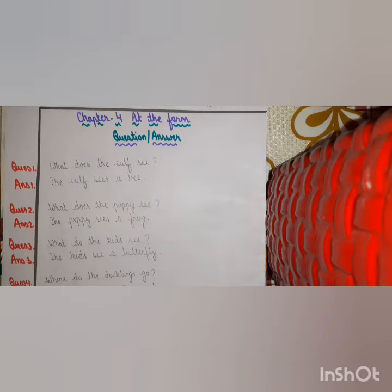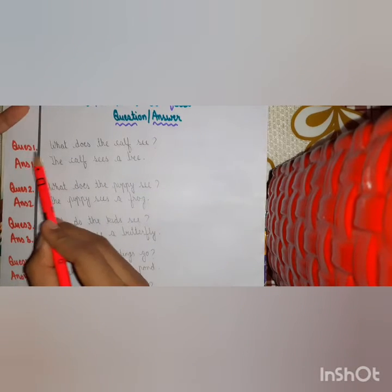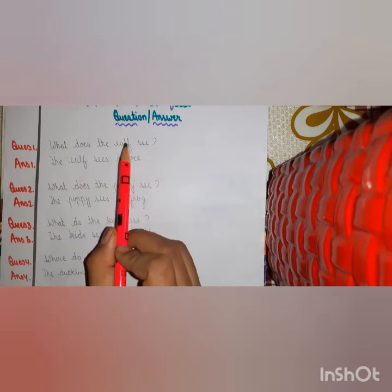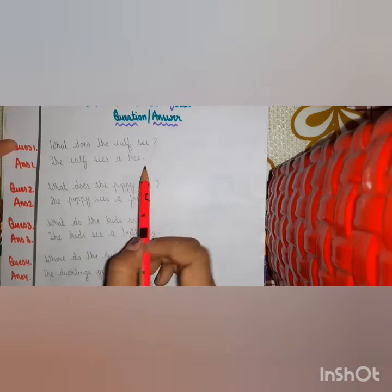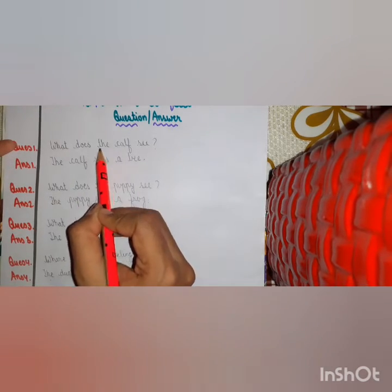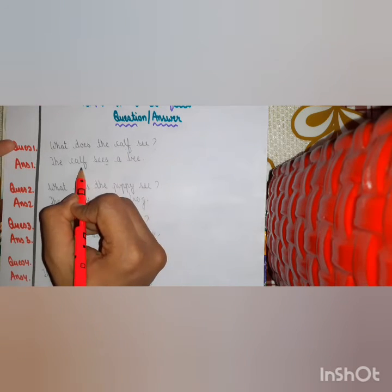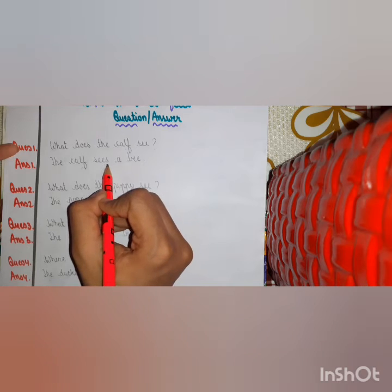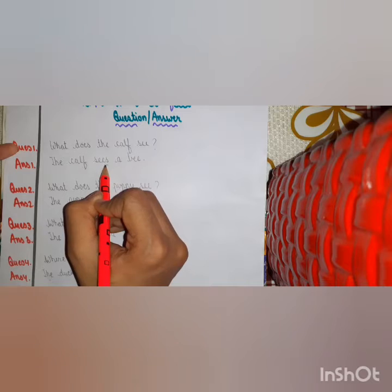Question 1: What does the calf see? Very good. So we will write: The calf sees a bee. We add S to the verb because it is singular.